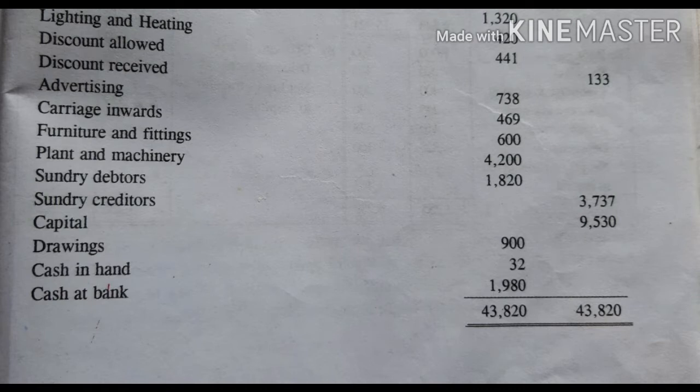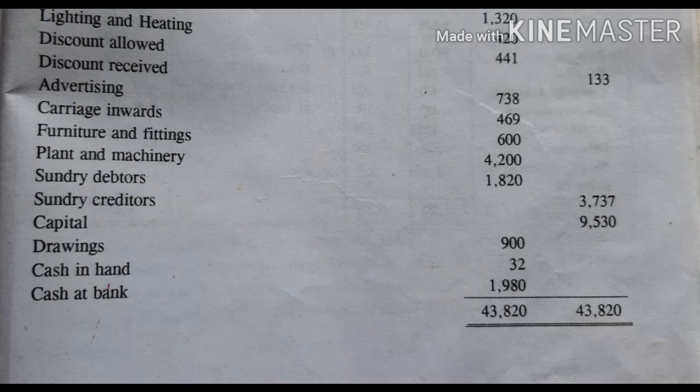Plant and machinery: 4,200 rupees. Sundry debtors: 1,820 rupees. Sundry creditors: 3,737 rupees. Capital: 9,530 rupees. Drawings: 900 rupees. Cash in hand: 32 rupees. Cash at bank: 1,980 rupees. Total: 43,820 rupees.